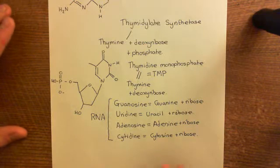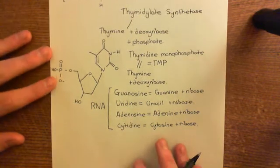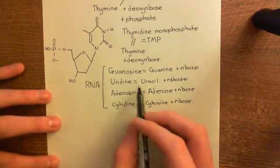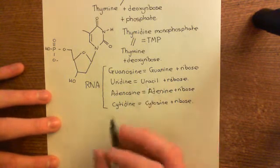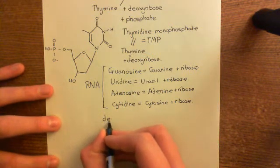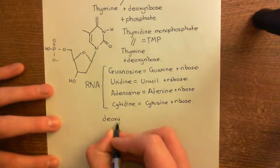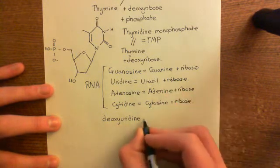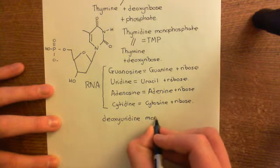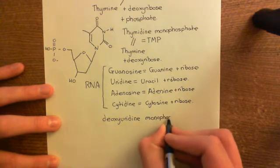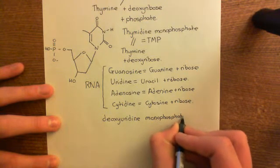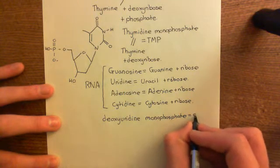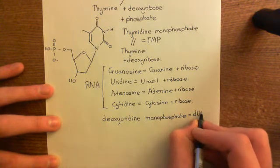So how are we going to synthesise thymidine monophosphate, or thymidylate? We're going to synthesise it from deoxyuridine monophosphate. Deoxyuridine means uracil bound to deoxyribose, and monophosphate means it has a single phosphate group attached. Deoxyuridine monophosphate is often abbreviated to dUMP — D for deoxy, U for uracil, M for mono, P for phosphate.